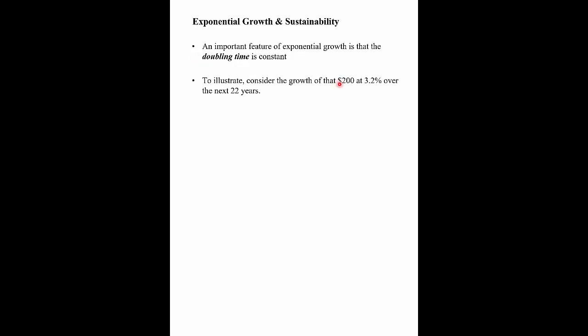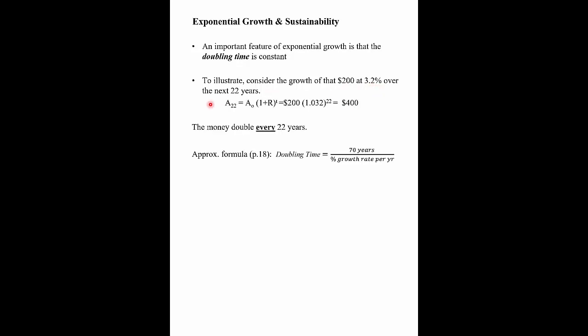The important point to note here is that the doubling time of exponential growth is constant. If you took your $200 after 22 years and let it ride for another 22 years — 1.032 raised to the 22 — you get $400. So you have a constant doubling time. There's a nice approximate formula on page 18 of your book: doubling time equals 70 divided by the percent growth rate. In this case, 70 divided by 3.2 gives approximately 22 years.